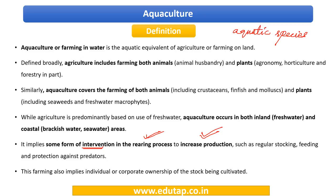The farming that is done has individual or corporate ownership of the stock being cultivated. The owner can actually decide what is to be done with the stock that is being cultivated. So this is in a nutshell about aquaculture. Let us proceed and have a look at the various classifications and other parameters required to be discussed as part of aquaculture.